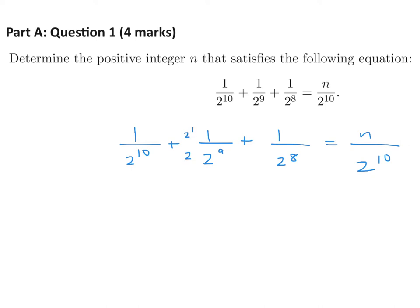Multiply top and bottom here by 2 to the power of 1. Multiply top and bottom here by 2 to the power of 2. That's going to give me 1 plus 2 plus 4 on the numerator, and the denominator is 2 to the power of 10, the common denominator.